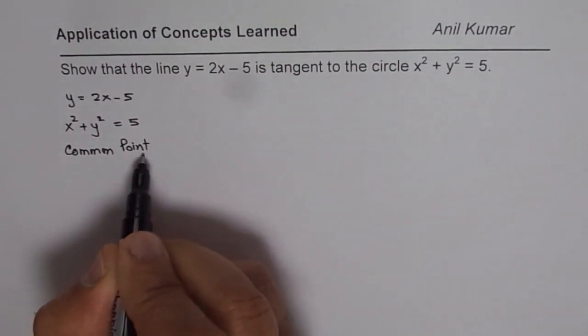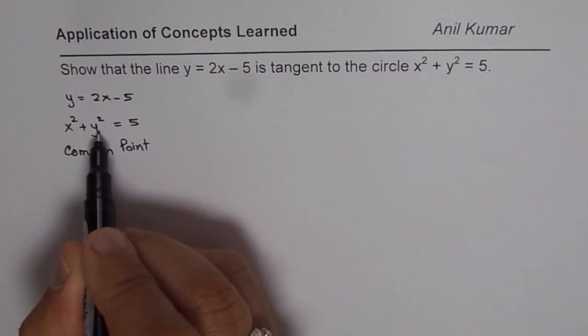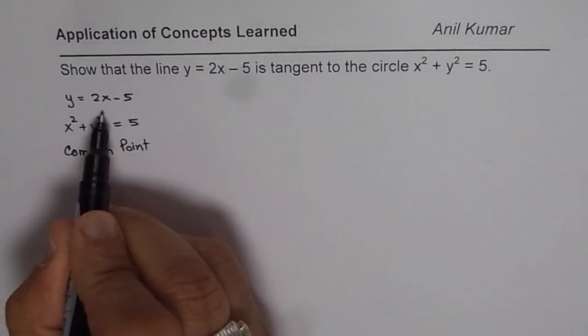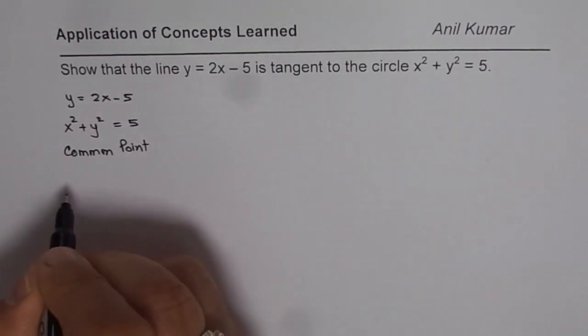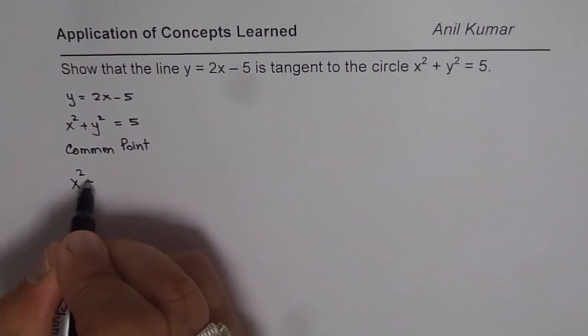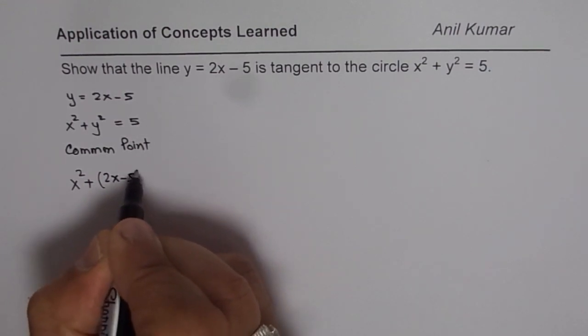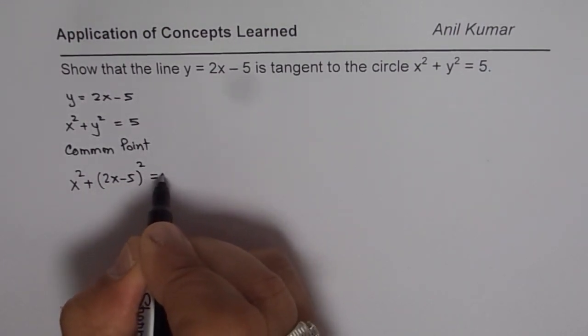So at that point, x and y values should be seen. So what we can do is, we can substitute this value of y in the second equation. So we get x square plus, instead of y, I am replacing it with 2x minus 5 whole square equals 5.